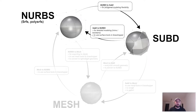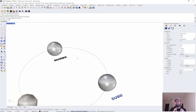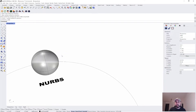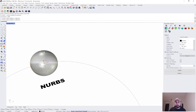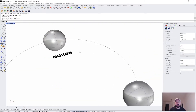Let's look at NURBS to SubD compatibility first. You'd use this conversion when you want to use more fluid, organic modeling tools to add detail. Conversely, you'd convert SubD back to NURBS to use Grasshopper's functionality with NURBS surfaces, or when you need boolean, split, or trimming commands — those basically require NURBS surfaces, SubD doesn't support that. NURBS surfaces will be shown in black, SubD in blue, and meshes in orange.